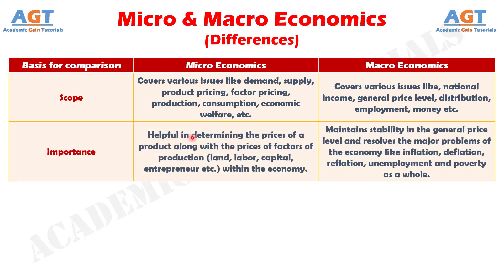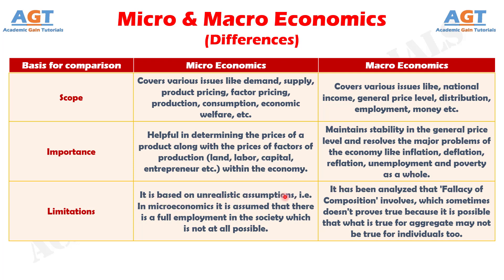Number 8: microeconomics is helpful in determining the prices of a product along with the prices of factors of production — land, labor, capital, entrepreneur, etc. — within the economy, whereas macroeconomics maintains stability in the general price level and resolves the major problems of the economy like inflation, deflation, reflation, unemployment, and poverty as a whole. Difference number 9: microeconomics is based on unrealistic assumptions — for example, it assumes full employment in the society, which is not at all possible — whereas in macroeconomics, the fallacy of composition is involved, which sometimes doesn't prove true, because what is true for the aggregate may not be true for individuals.